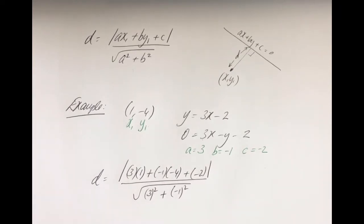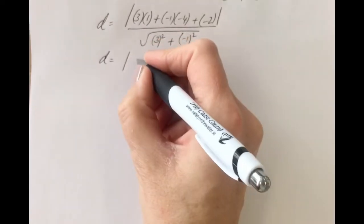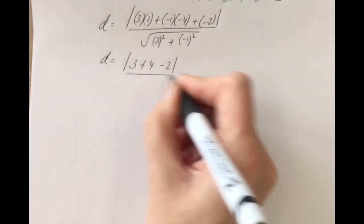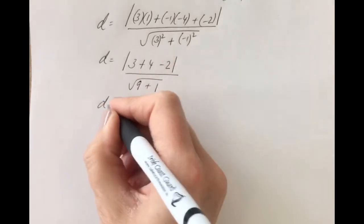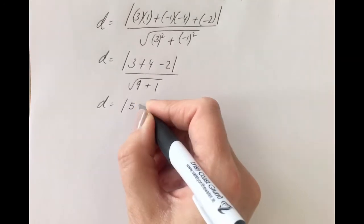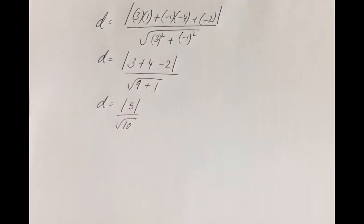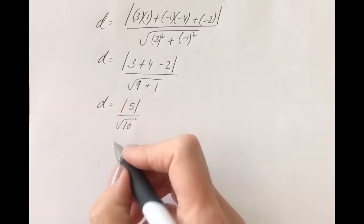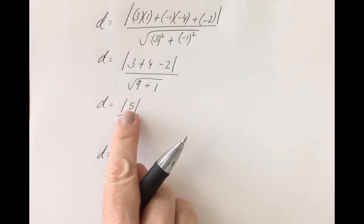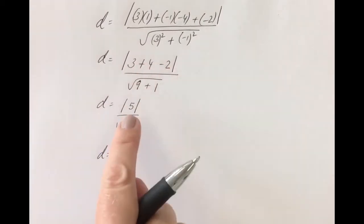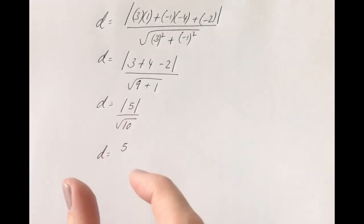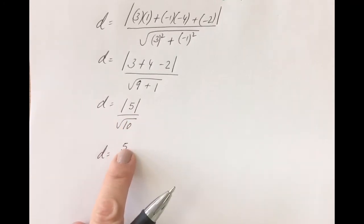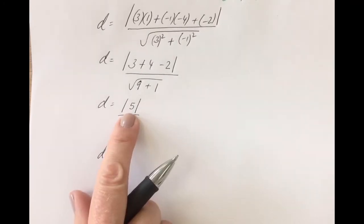Now let's evaluate. D equals 3 times 1 is 3, minus 1 times minus 4 is plus 4, and minus 2, all over the square root of 9 plus 1. That equals 5 over the square root of 10. Now, the modulus of 5 — what this means is the modulus implies distance. So the distance of 5 is 5. Where this comes into play more crucially is if you end up with a negative inside — the distance of a negative number is still a positive value. Regardless of whether it's positive or negative, the modulus means you always take the positive value, because distance can never be negative.